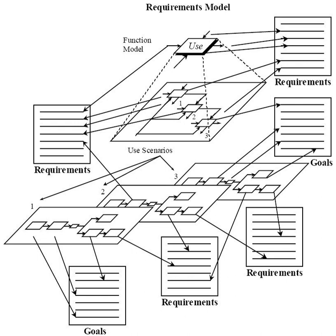A decomposition diagram shows a complex process, organization, data subject area, or other type of object broken down into lower level, more detailed components. For example, decomposition diagrams may represent organizational structure or functional decomposition into processes. Decomposition diagrams provide a logical hierarchical decomposition of a system.